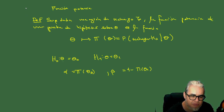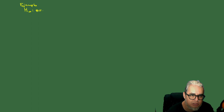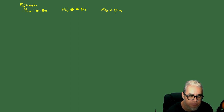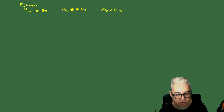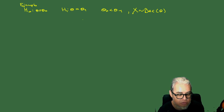Vamos a ver un ejemplo más o menos general. En este ejemplo tenemos dos hipótesis que las podemos escribir con parámetros θ₀ y θ₁, donde θ₀ es más pequeño que θ₁, y son valores fijos del parámetro de una Bernoulli. θ₀ y θ₁ son valores fijos para el parámetro.